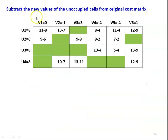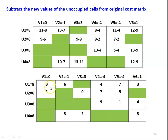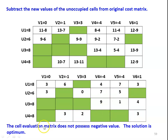Next, subtract the computed UV value of each unoccupied cell from its original cost: 11−8, 13−7, 8−4, 11−4, 12−9, 9−6, 9−9, 9−2, 7−2, 13−4, 5−4, 13−9, 12−10, 13−11, 10−7. This gives the cell evaluation matrix. All values in the unoccupied cells are positive — the cell evaluation matrix has no negative value — so the previous basic feasible solution is optimal.